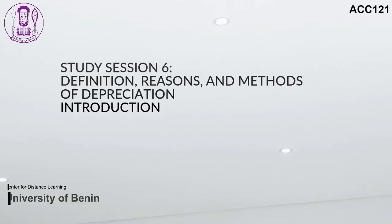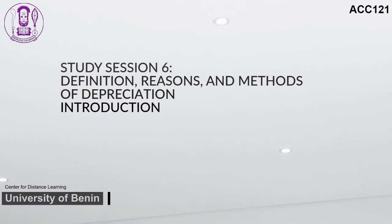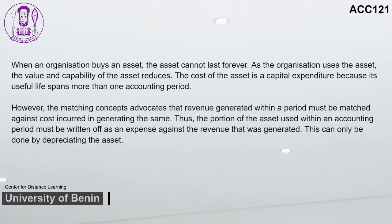Study Session 6: Definition, Reasons, and Methods of Depreciation. When an organization buys an asset, the asset cannot last forever. As the organization uses the asset, its value and capability reduce. The cost of the asset is a capital expenditure because its useful life spans more than one accounting period. The matching concept advocates that revenue generated within a period must be matched against the cost incurred in generating the same. Thus, the portion of the asset used within an accounting period must be written off as an expense against the revenue generated, which is done by depreciating the asset.